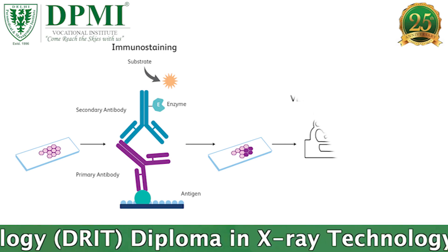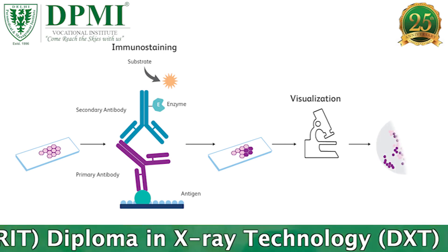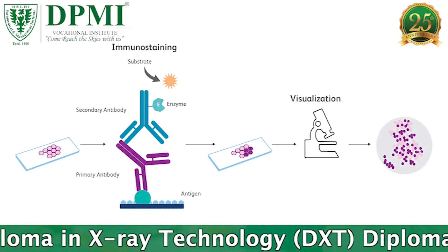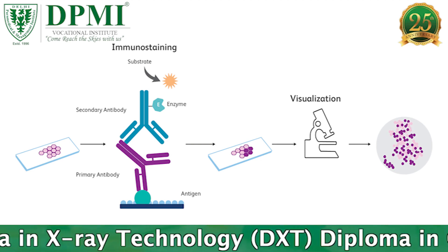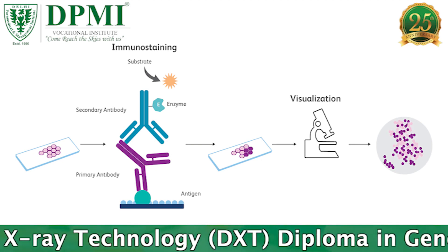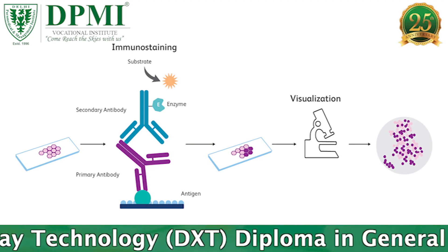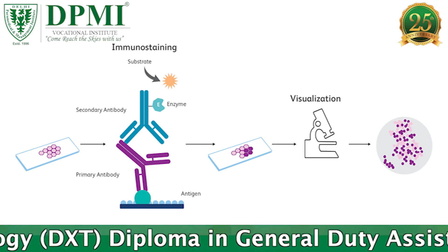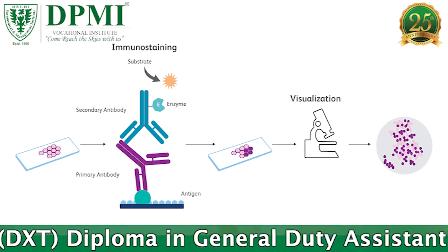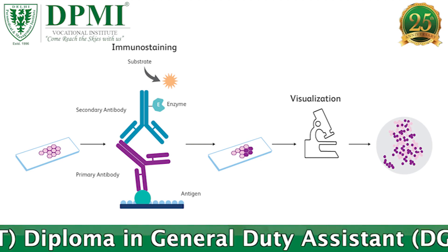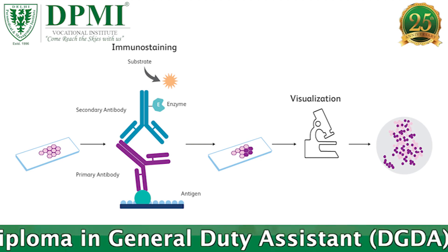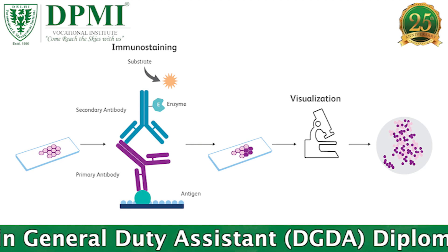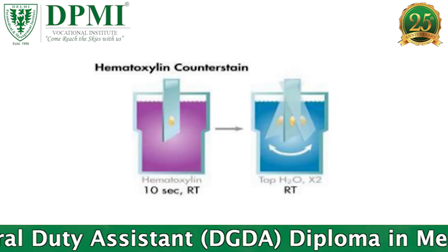Enzymes like HRP can target certain substrate molecules like diaminobenzidine (DAB) and catalyze oxidation, which creates colorful compounds. This colorful compound will stay localized to the area the antibody was targeted to, staining the area near the protein of interest a different color from the rest of the tissue.